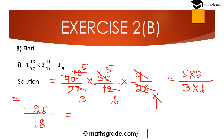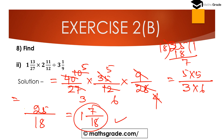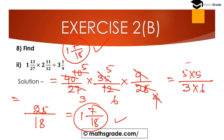25/18 is an improper fraction, so convert to mixed fraction. 18 × 1 = 18, 25 − 18 = 7 remainder. So the answer is 1 7/18. Therefore, 1 13/27 × 2 11/12 ÷ 3 1/9 = 1 7/18.